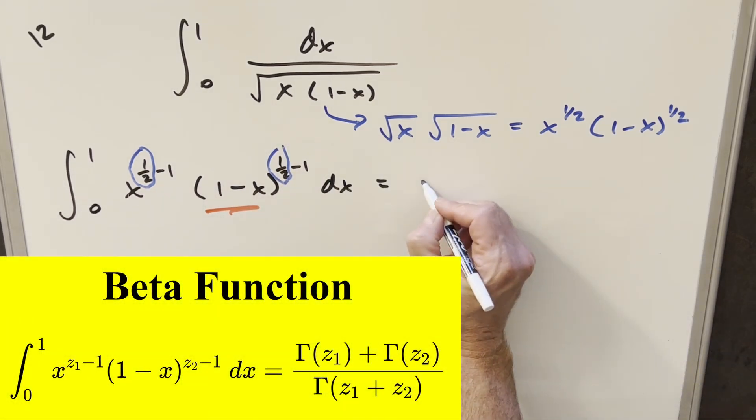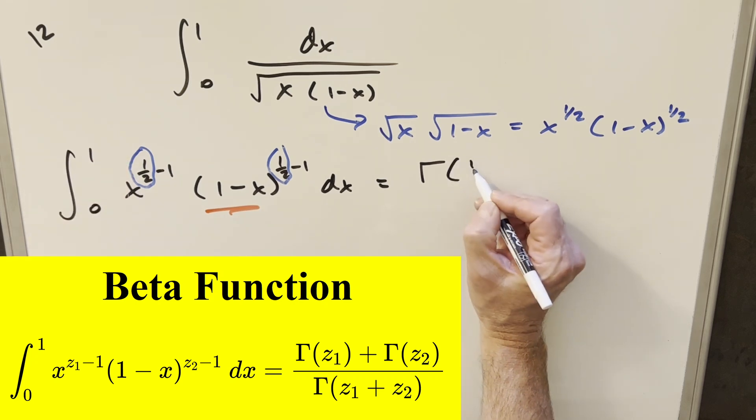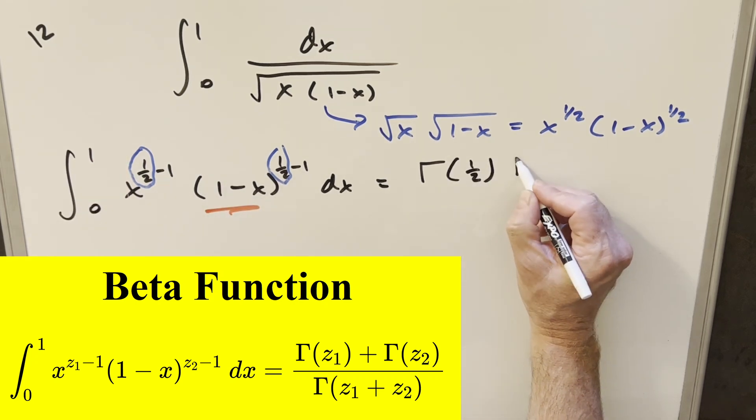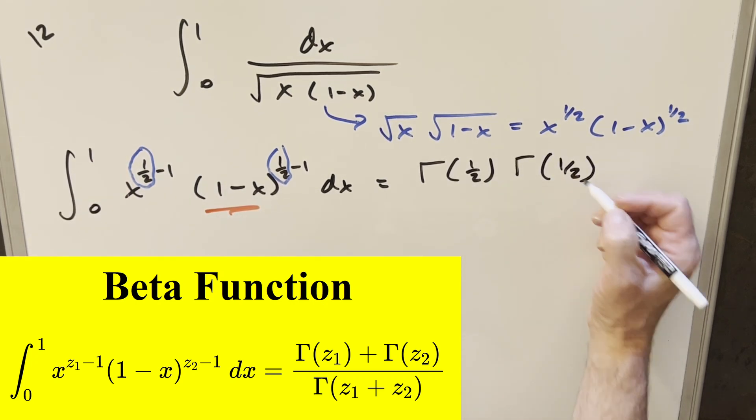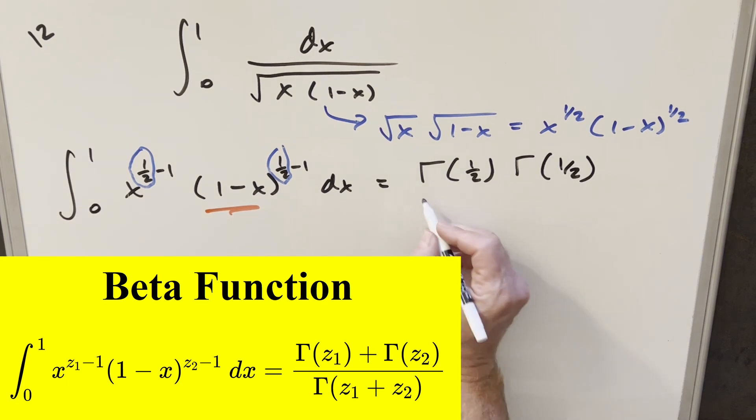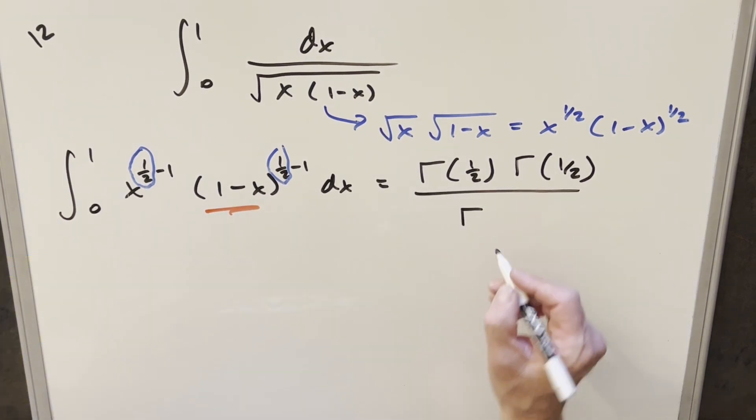So doing this, what's going to happen is we're going to get, for this first part, gamma of 1 half. For the second part, same thing, gamma of 1 half. And then the denominator, we get the sum of the two. So just gamma of 1 half plus 1 half, or just gamma of 1.